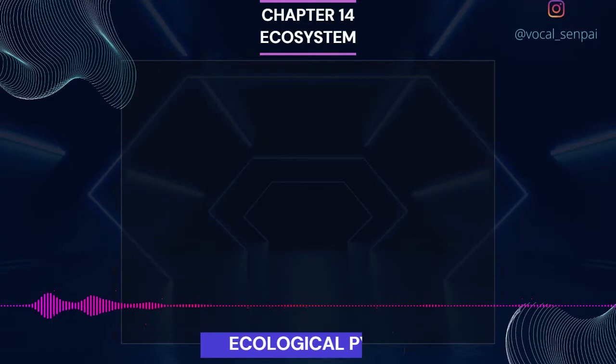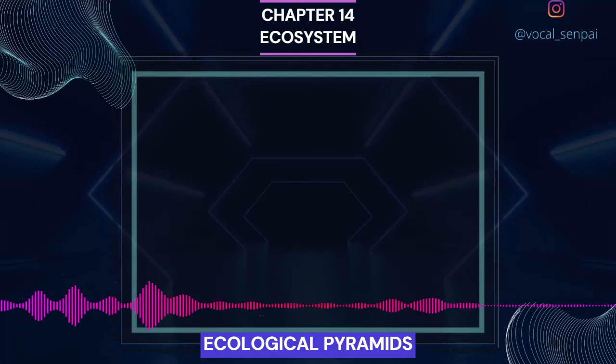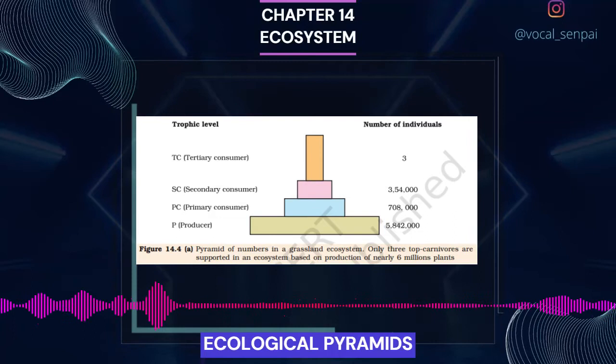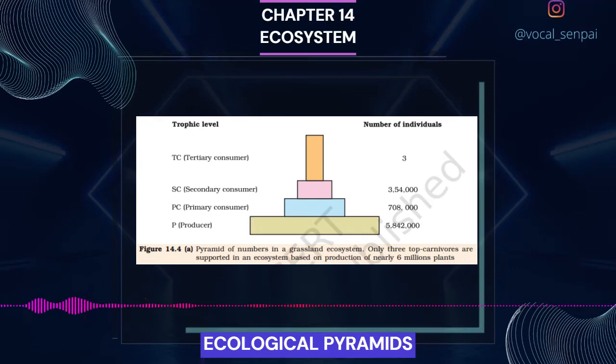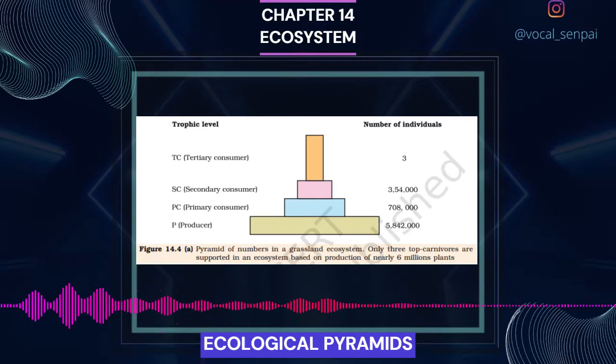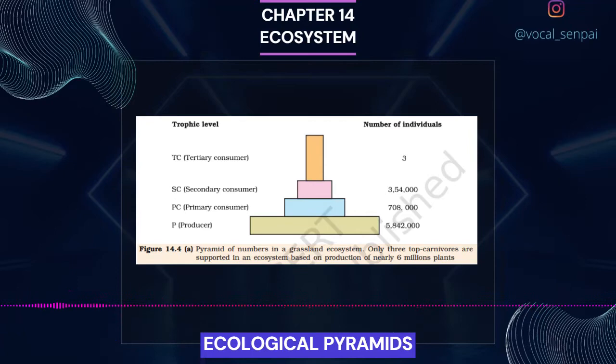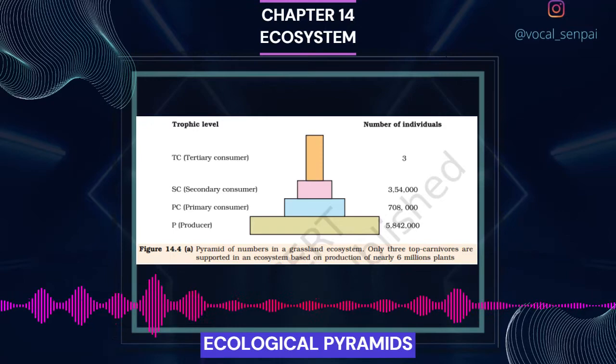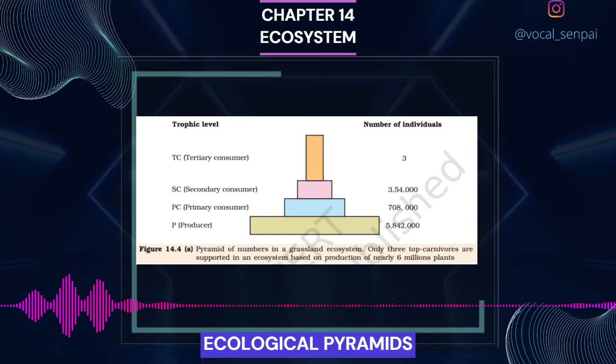Ecological pyramids. You must be familiar with the shape of a pyramid. The base of a pyramid is broad and it narrows towards the apex. One gets a similar shape whether you express the food or energy relationship between organisms at different trophic levels. This relationship is expressed in terms of number, biomass, or energy. The base of each pyramid represents the producers or the first trophic level while the apex represents the tertiary or top level consumer. The three types of ecological pyramids usually studied are: a) pyramid of number, b) pyramid of biomass, and c) pyramid of energy.